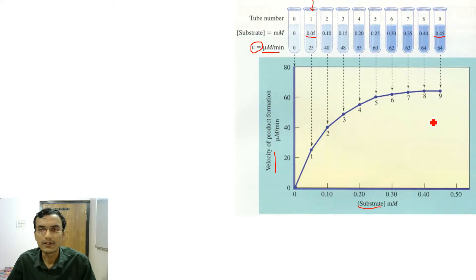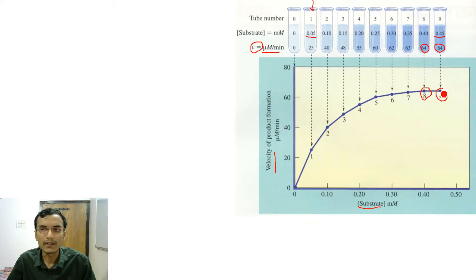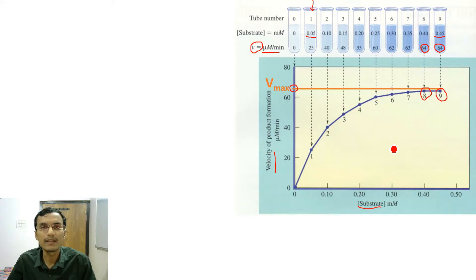In test tubes 8 and 9, the measured initial velocity is 64 micromolar per minute. From this point onwards, increasing the substrate concentration does not increase the initial velocity. If we draw a line from the curve to the y-axis, this value of approximately 64 is known as Vmax — the maximum velocity of an enzyme-catalyzed reaction.